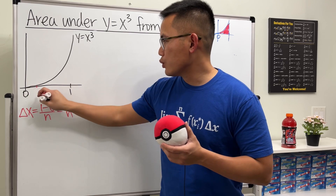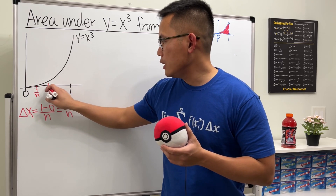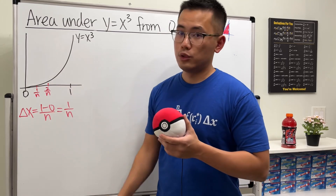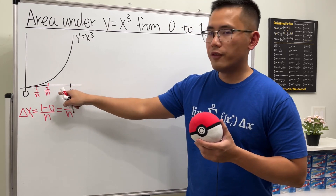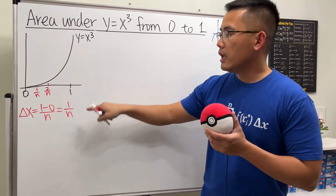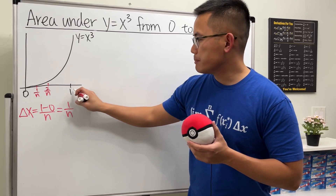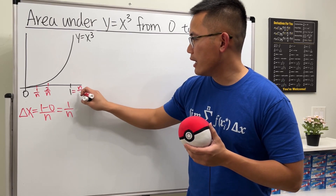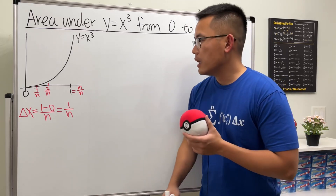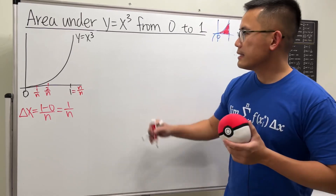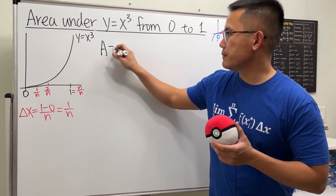Each time we step over, it goes up by 1/n. So the first interval is from zero to 1/n, then the next x-value is 2/n, then 3/n, and so on. The last one is 1, but let's purposely write it as n/n so they all have the same denominator.